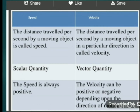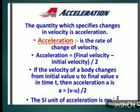Speed is always positive, whereas velocity can be positive or negative depending upon the direction of motion; velocity can even be zero. Speed is always positive because whenever an object is in motion, distance is always a positive magnitude, and dividing a positive number by time always gives a positive result. In the case of velocity, we calculate displacement, which can be positive, negative, or zero, so velocity can also be positive, negative, or zero.